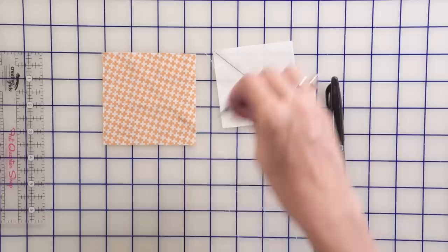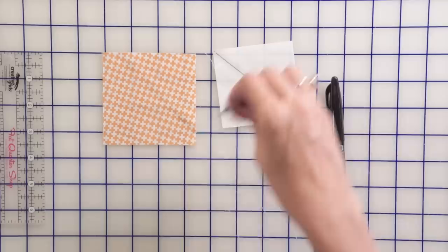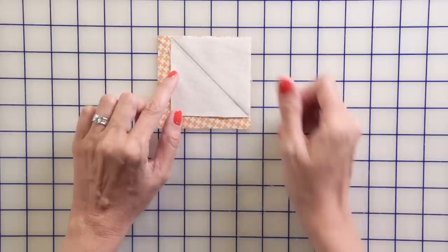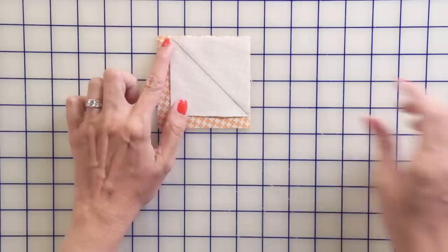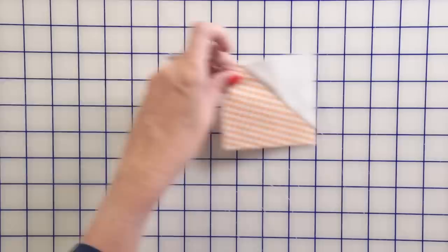Now we're going to make our stem unit. You're going to take a fabric B square and a fabric E square. On the wrong side of your fabric E square, draw a line from corner to corner with a friction pen using the same method. You're going to place the fabric E square on the top right corner of your fabric B. Stitch directly on the line, then trim a quarter inch away and press.